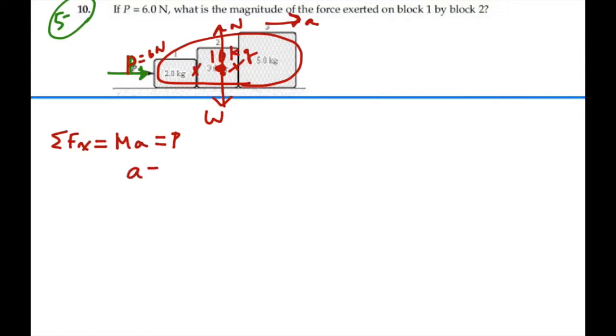So the acceleration is going to equal P divided by M. And that's going to be 6 Newtons divided by 10 kilograms, or 0.6 meters per second squared.